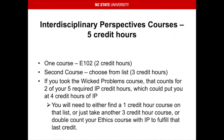Your interdisciplinary perspectives courses total five credit hours of your GEPs. One course must be E102, which totals two credit hours. The second course you can choose from the list and will total three credit hours. If you took the Wicked Problems course, that counts for two of your five required interdisciplinary perspectives credit hours, which could put you at four credit hours if you've already taken E102. You will need to either find a one credit hour course on that list or take another three credit hour course. Your other option is to double count your ethics course with an interdisciplinary perspectives course to fulfill that last credit — I go over which courses do so later in the PowerPoint.